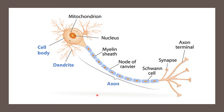Here I have a diagram of a simple neuron. You can see that a neuron has three parts: dendrites, cell body, and axon. At the end of the axon, the part which looks like branches is called the axon terminal.